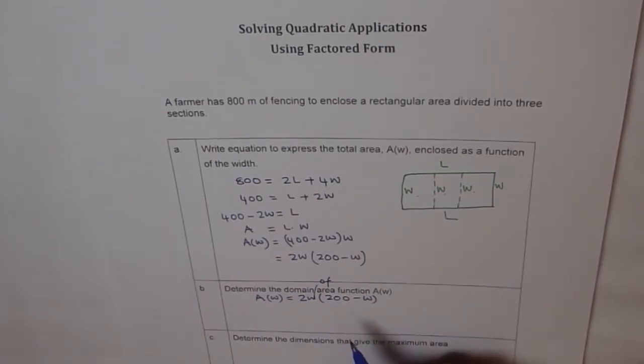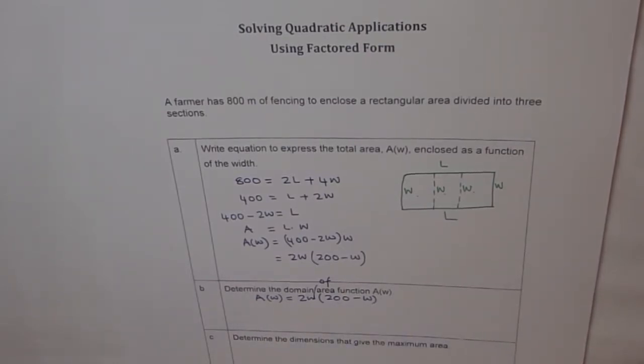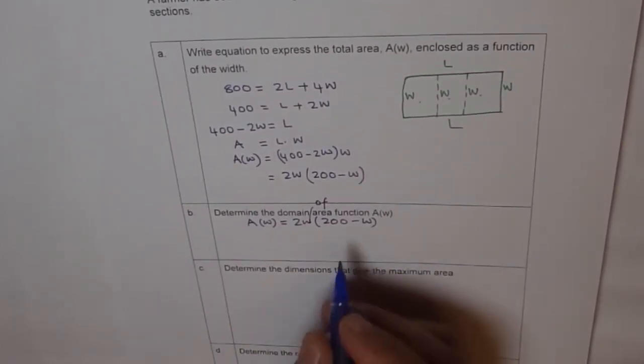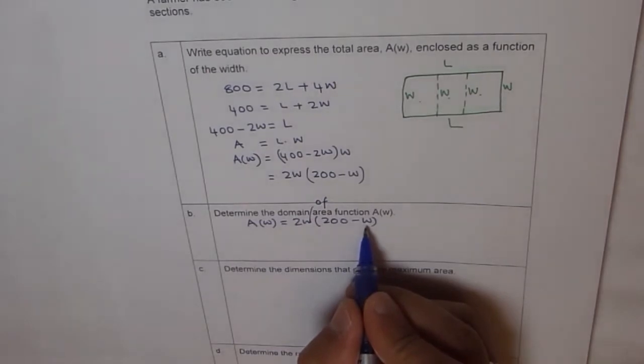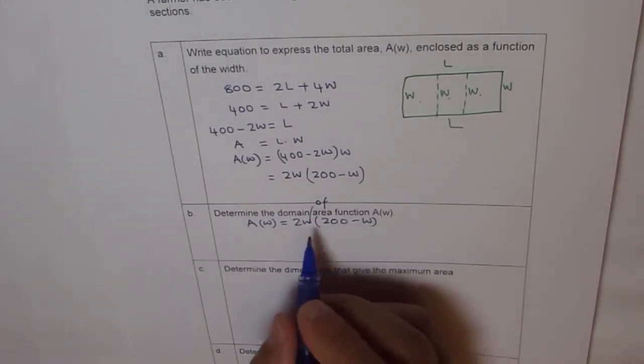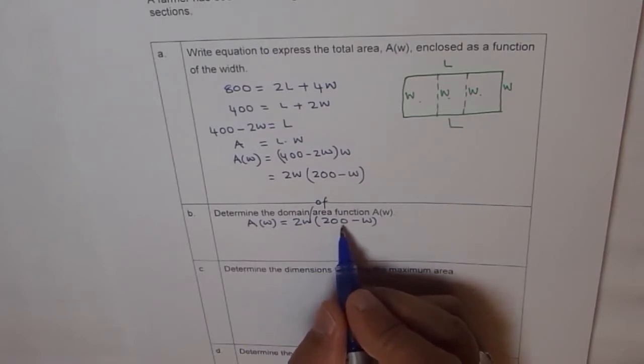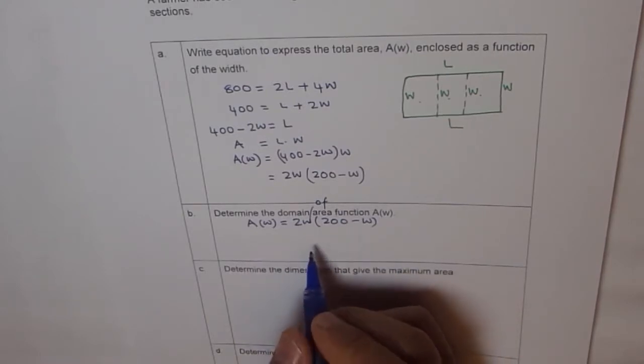We have function A(W) equals to 2W times 200 minus W. Now, if W is more than 200, in that case, the area will become negative. Now, area can never be negative. Therefore, there is a limit on the width. So we say that the width should be between 0 to 200. That gives us the domain.